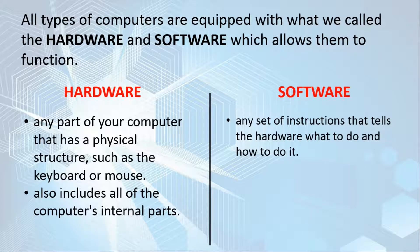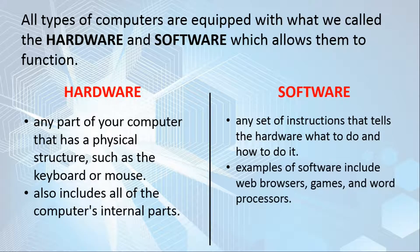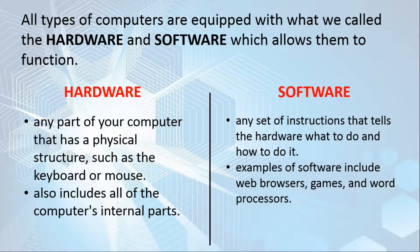When we say software, it is any set of instructions that tells the hardware what to do and how to do it. Software is the one that dictates what the hardware should do in order to respond to the direction given by the user. Examples of software are browsers, games, and word processors. Simply put, software gives instructions to hardware so the computer can function.